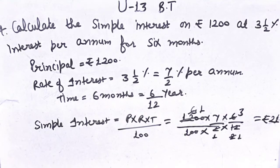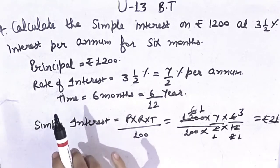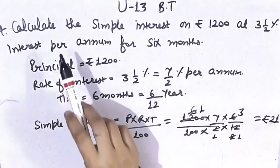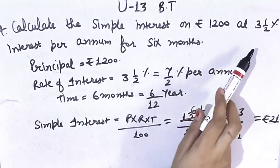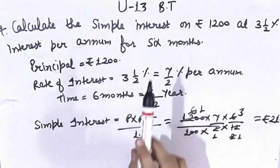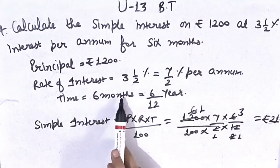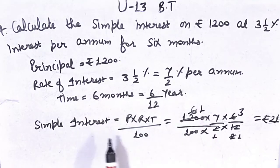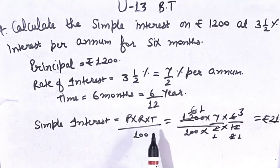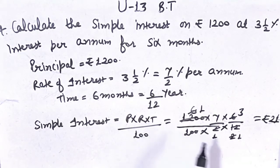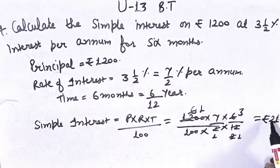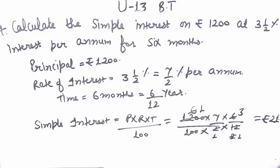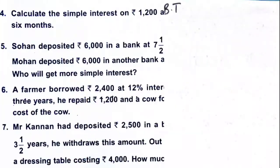Is it clear? Let's check once again. To calculate simple interest, principal, rate of interest, and time are given. Time is in months, so first convert to years. Formula of simple interest is principal × rate of interest × time ÷ 100. Put values and cancel the terms, and you will get the answer. Answer is Rs.21.